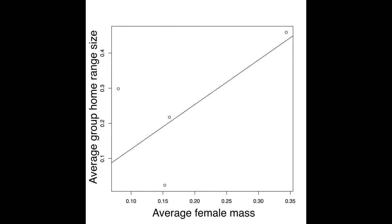Let's see what the trend looks like when we use the standardized inferred measurements from the nodes — from the inferred ancestors. We can see that, in this case, there is still a positive trend as indicated by the regression line between average female mass and average home range sizes. Thus, we can now feel free to hypothesize about what it is about primates that makes female size so important to the size of primate territories, because the analysis we have performed is not tainted by non-independent measurements.